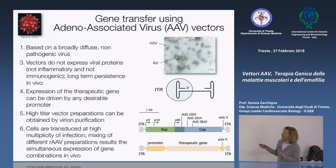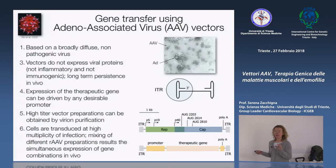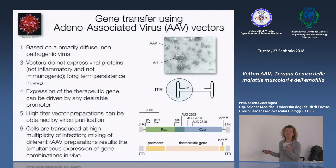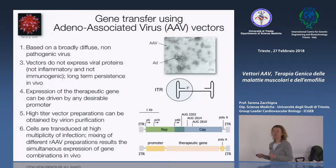Perché? Perché REP, che lega questa struttura, è capace di riconoscere una sequenza dell'ITR di AAV esattamente uguale a un frammento di DNA all'interno di una specifica posizione del cromosoma 19. Questo fa sì che quando REP lega l'ITR, sia capace di far integrare il genoma specificatamente in quella posizione nel cromosoma 19 umano. Questo non vale per le altre specie animali.